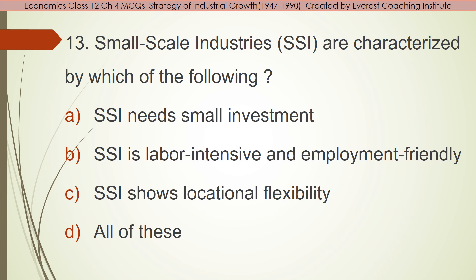Question number thirteen: Small scale industries — also called SSI — are characterized by which of the following? SSI needs small investment; SSI is labor intensive and environment friendly; and SSI shows locational flexibility. All three features are characteristics of small scale industries. So the answer is option D — all of these.